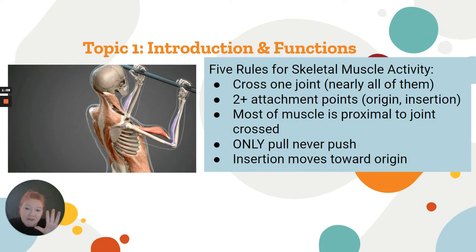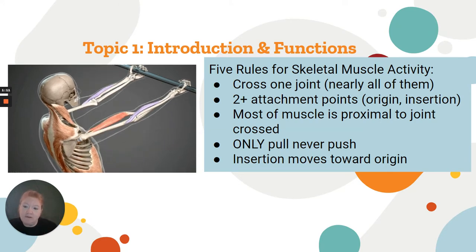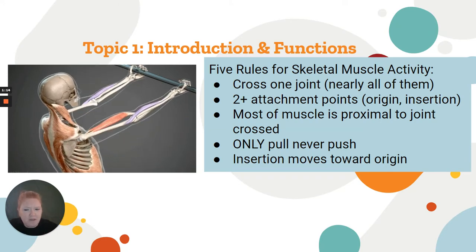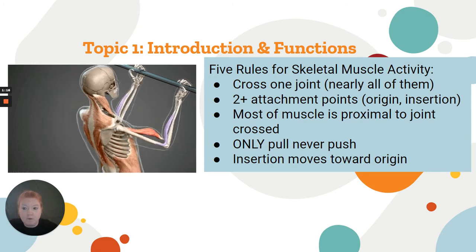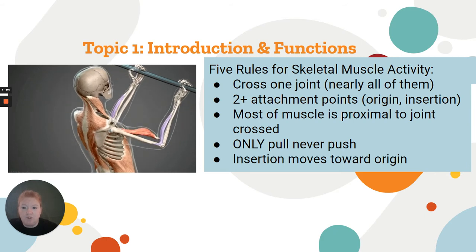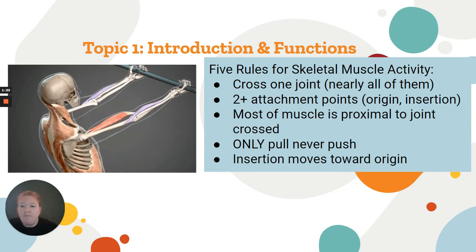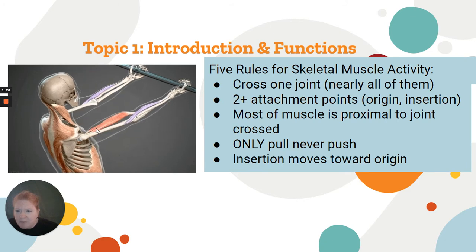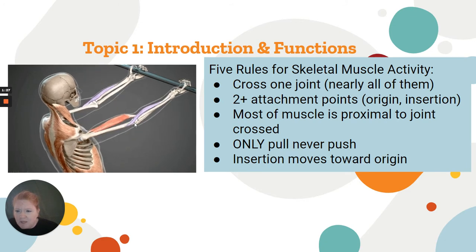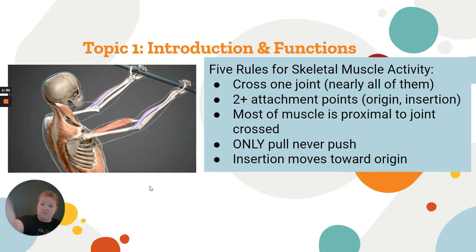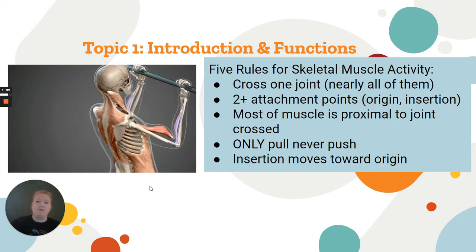We talked about the five rules for skeletal muscle activity. You don't need to know the rules in any kind of order — just the concepts. Skeletal muscles cross at least one joint. You can see in this picture the biceps brachii crosses this joint, which is what allows the movement — it allows the flexion of your arm.